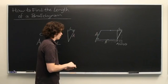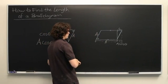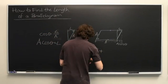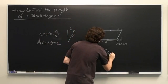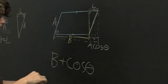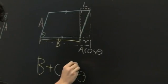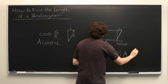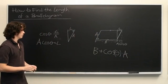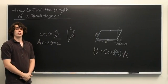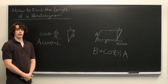Well then the length of the entire parallelogram can simply be written as b plus the cosine of theta times a. And there we have it. My name is Ryan Malloy and we've just discussed how to find the length of a parallelogram.